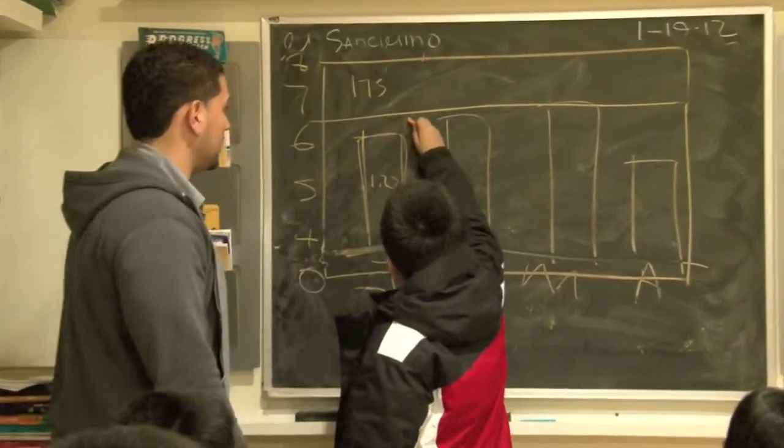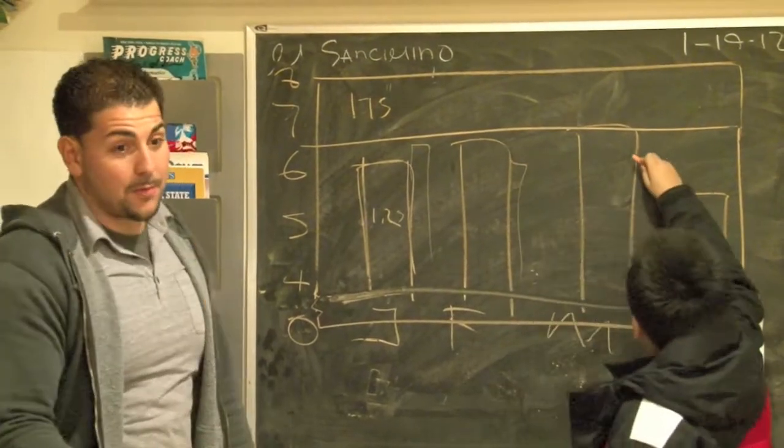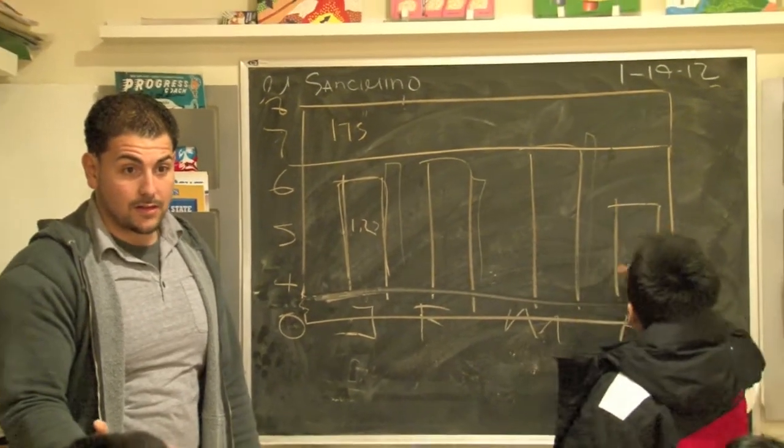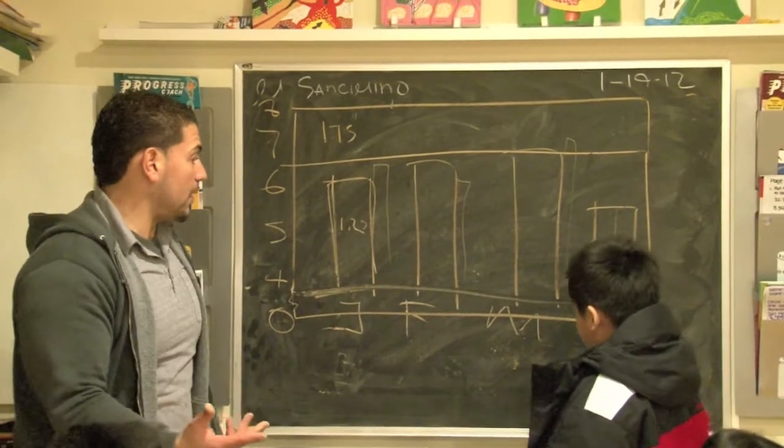Go ahead. Show me the easier way. A double bar graph? You could do a double bar graph. What do we say about bar graphs? They're very what? Lonely. They're very lonely. They're very boring. Could you do a double bar? Yeah.